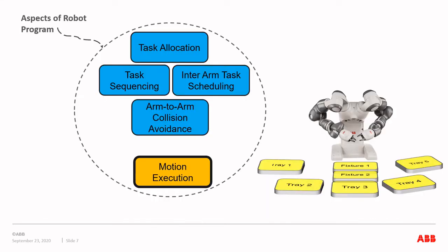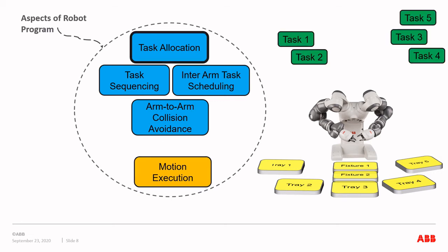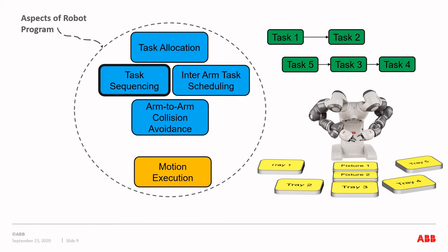There are five aspects to a robot program, and we include four of them in our model. For the fifth aspect — motion execution — we rely on pre-computed motion executions provided outside the CP model. Each motion executes each task such as pick and place, as well as moving from one task to the next. One of the four aspects is task allocation: the assignment of every task to one of the two arms according to the rules of the application. A second aspect is task sequencing: the ordering of tasks for each arm constrained by application rules. For example, a component needs to be picked before it's placed, and a tool cannot pick a component if it is already occupied.